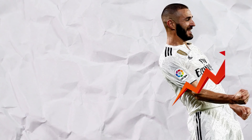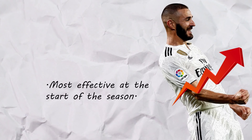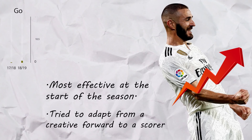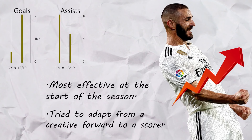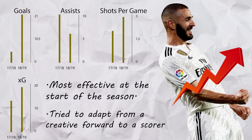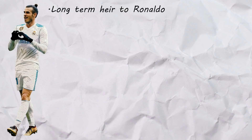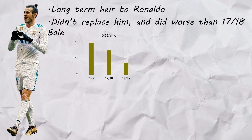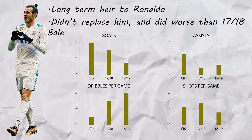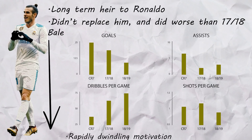One man who did lift his game, especially in the early part of the season, was Benzema. He increased both his goals and assists from the prior season as he was now playing closer to goal — his shots per game increased, making him their most dangerous player. There was always a feeling that Bale was brought in as the long-term heir to Ronaldo, and it was his season to prove that. But instead he regressed — not only not doing as well as Ronaldo, but actually worse than he did the previous season. He scored less, took fewer shots, fewer key passes, and even his motivation dwindled.